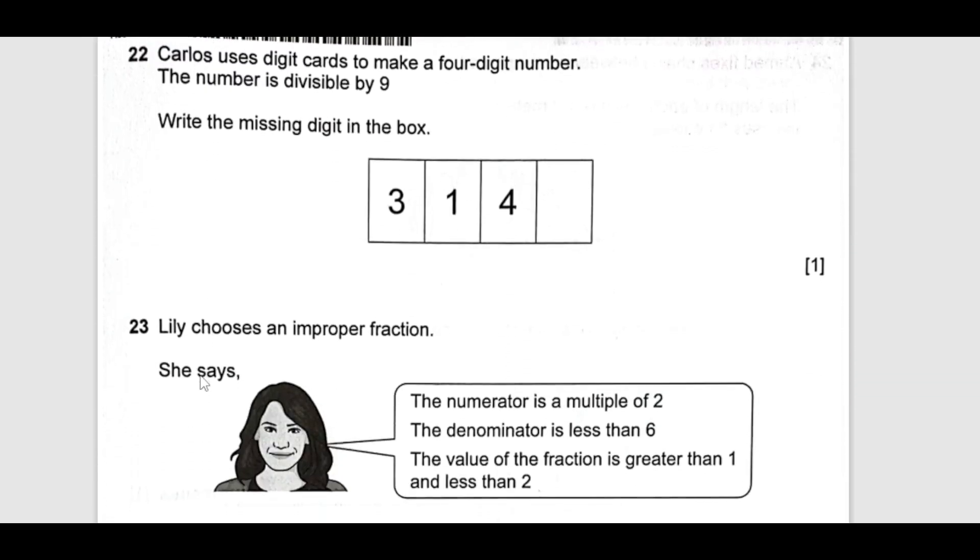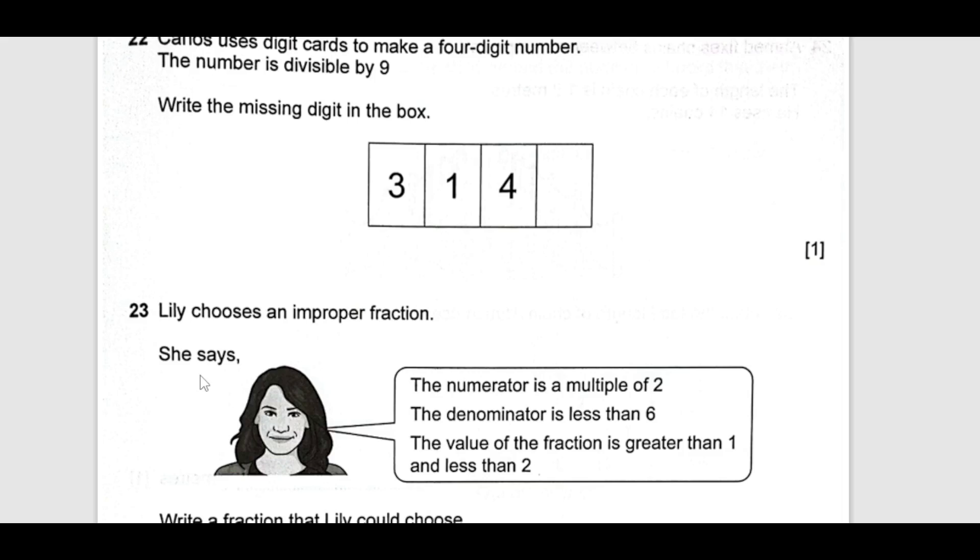Now 22, Carlos uses digit cards to make a four-digit number. The number is divisible by 9. Write down the missing number in the box. If the sum of digits are a multiple of 9, then a number is divisible by 9. So we can add 3 plus 1 plus 4 plus something else. 3 plus 1 is 4, 4 plus 4 is 8. So we should have 1 here to make the answer 9. Then this number is going to be divisible. Or you may have like the next one is 18, so you can also put 10. No, we can't put 10 here because then this will become two digits. So 1 will be going to go here.